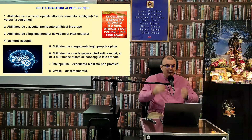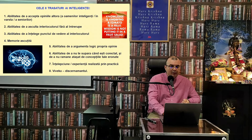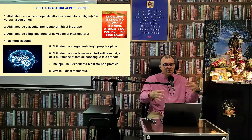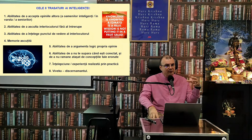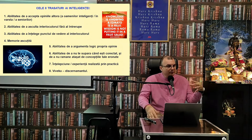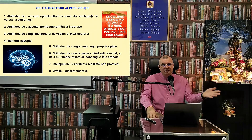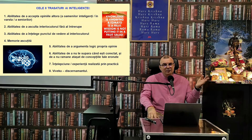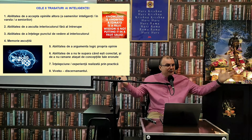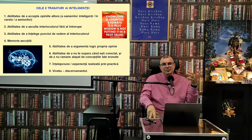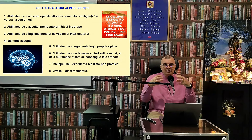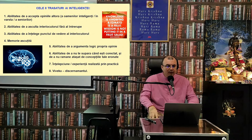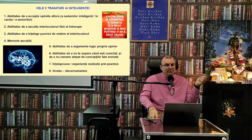A cincea trăsătură este abilitatea de a argumenta logic propria opinie — uneori devenim foarte emoționali, vrem să urlăm, ceea ce arată că inteligența noastră emoțională nu este foarte dezvoltată. A șasea trăsătură: abilitatea de a nu te supăra când ești corectat și de a nu rămâne atașat de concepțiile tale eronate — tot este un semn al inteligenței.